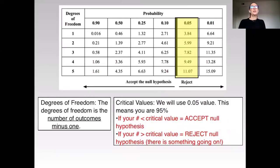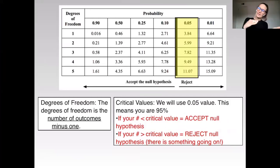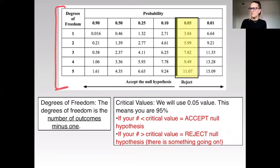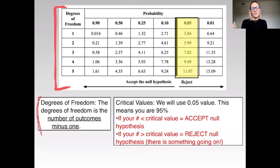A chi-square uses what is called a degrees of freedom chart. There's a chart that you have to look up and it will help you determine whether you're going to accept or reject your chi-square. The degrees of freedom is the number of outcomes you expect minus one.